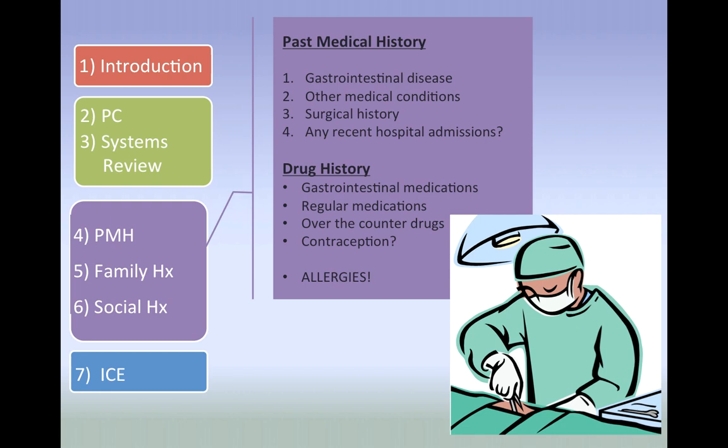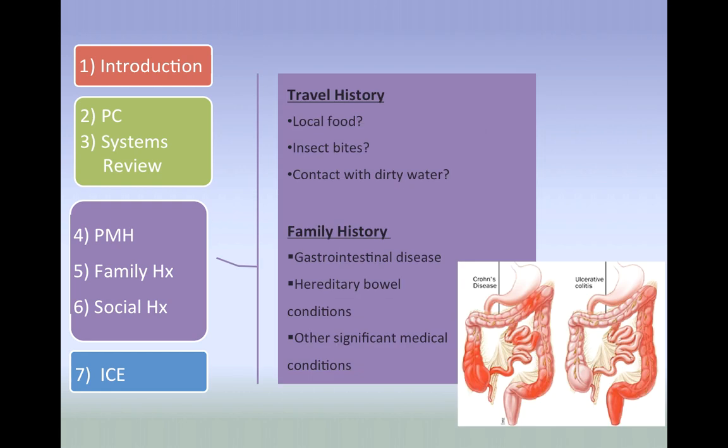Moving on to drug history: ask about both prescribed medications such as NSAIDs and PPIs, and over-the-counter medication. Don't forget to ask about compliance and whether they are using medication appropriately. This is also a good time to ask about allergies — such as penicillin — and what happens when they take it. In a GI history, it's important to ask about travel: have they ingested uncooked food or dirty water? This could suggest salmonella or shigella poisoning. Have they been bitten? This could suggest malaria.